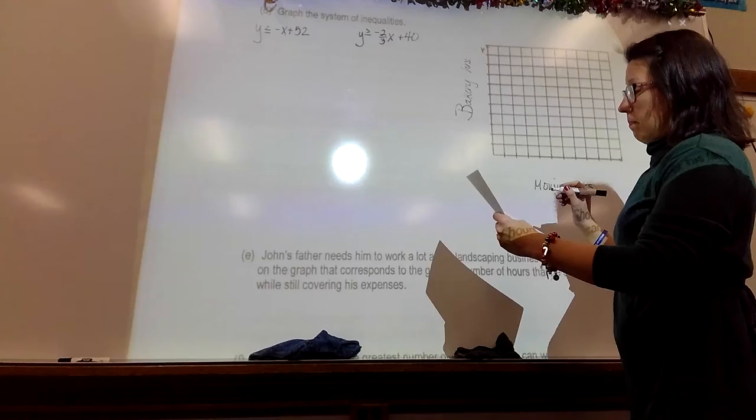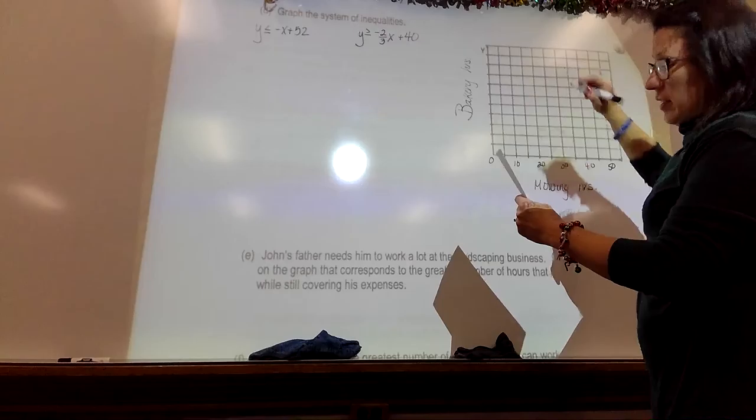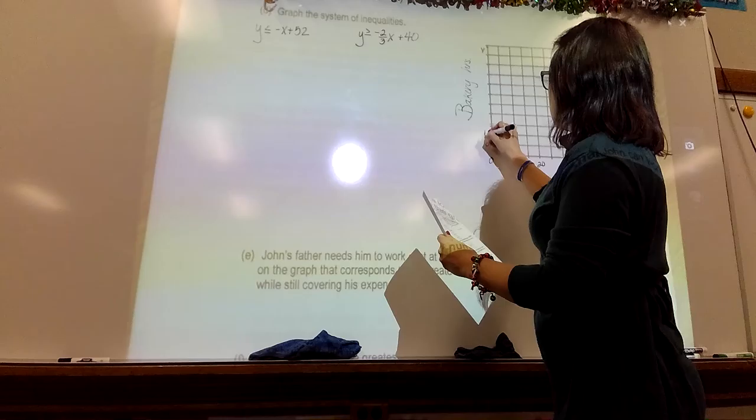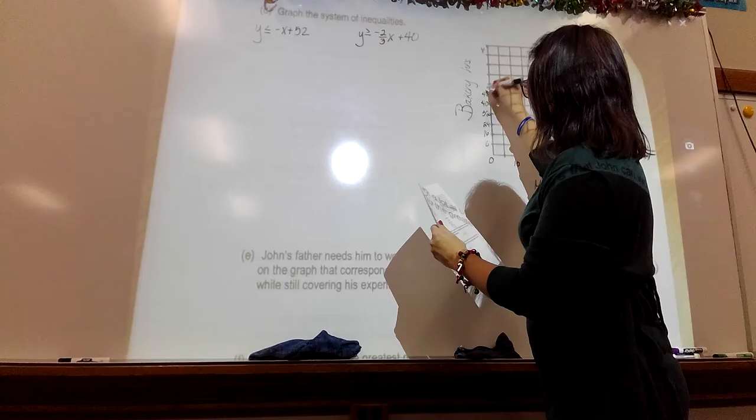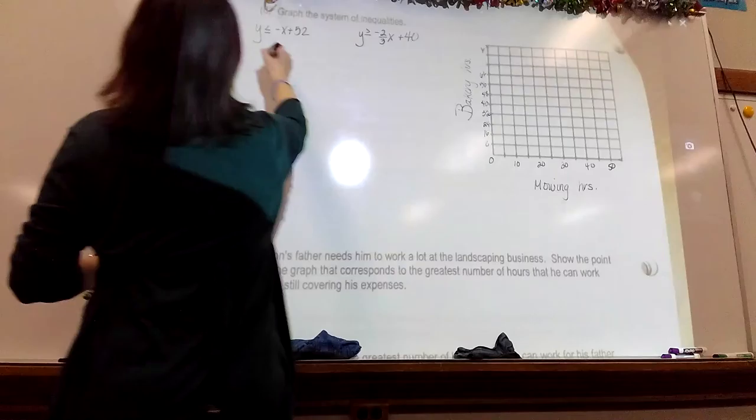When I chose to graph it, I chose to count by 5s across the bottom, 0, 5, 10, 15, 20, 25, 30, 35, 40, 45, 50. Up the side, I chose to count by 8s, 8, 16, 24, 32, 40, 48, 56, 64. That's high enough.